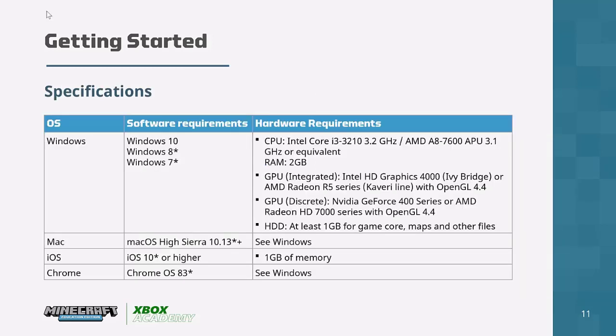A common question is whether you need a high-powered gaming rig to run Minecraft in the classroom. Thankfully, the answer is no. Minecraft has been written from the ground up based on the pocket edition, designed for mobile devices and iPads, so it's suitable for most classroom devices. For Windows, the recommended CPU is an Intel Core i3 or equivalent at 3.2 GHz. For Mac, Chrome, and iOS, all that's required is at least 1 GB of memory.